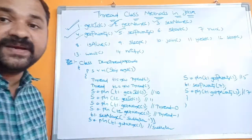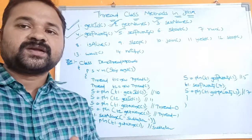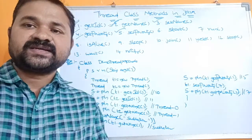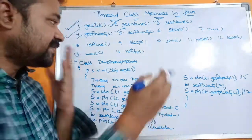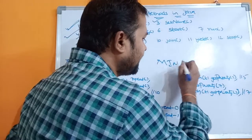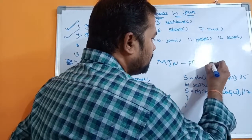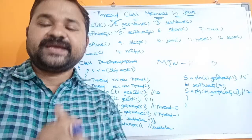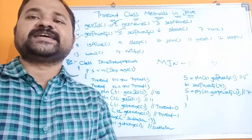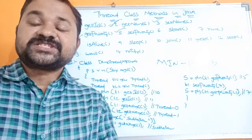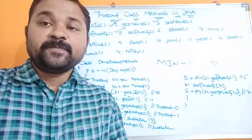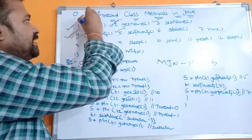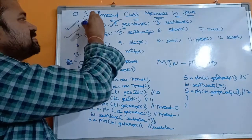Now let's see the getPriority method. getPriority returns the priority of the thread. Generally we have three types of priorities: the first one is minimum priority, the second one is normal priority, and the third one is maximum priority. The minimum priority of a thread is 0, normal priority is 5, and maximum priority is 10.